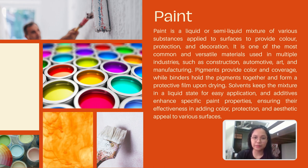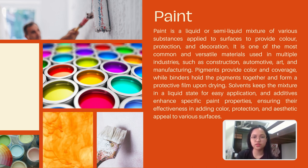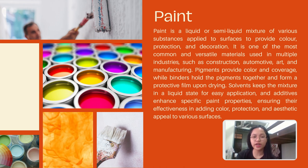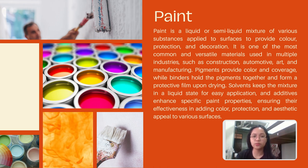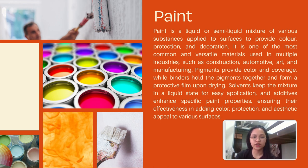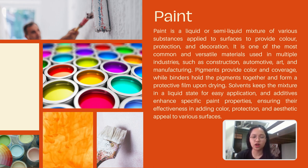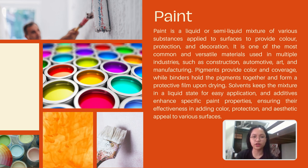Paint is typically made from a combination of raw materials including solvents, pigments, binders, and additives. These raw materials are carefully selected and combined in precise proportions to create the desired properties and characteristics in the finished paint. Paint is a liquid or semi-liquid mixture of various substances applied to surfaces to provide color, protection, and decoration. It is one of the most common and versatile materials used in multiple industries such as construction, art, and manufacturing. Pigments are the colorants that give paint its color, while additives are substances added to improve performance or alter properties.